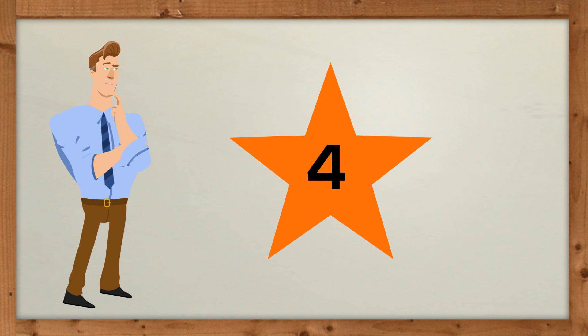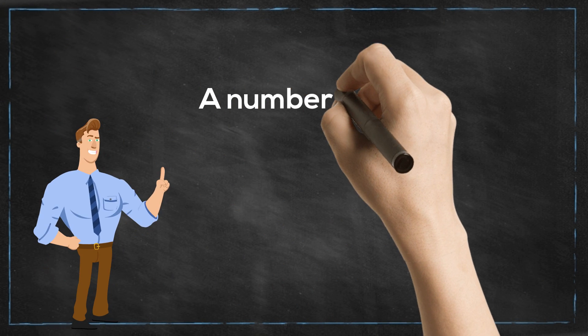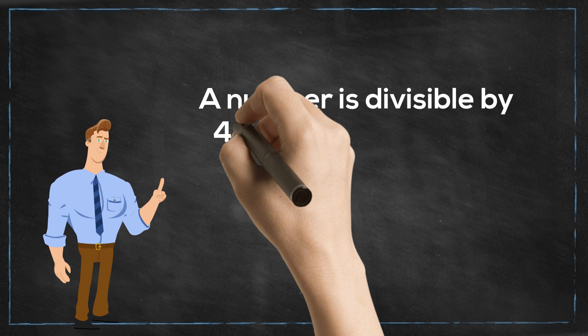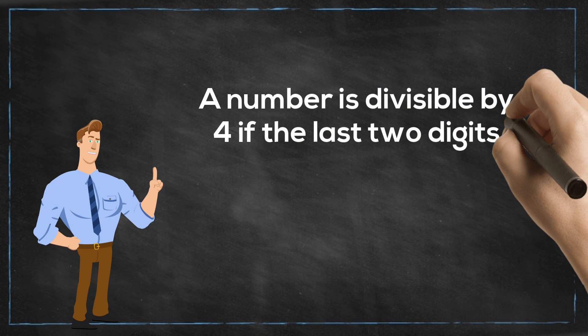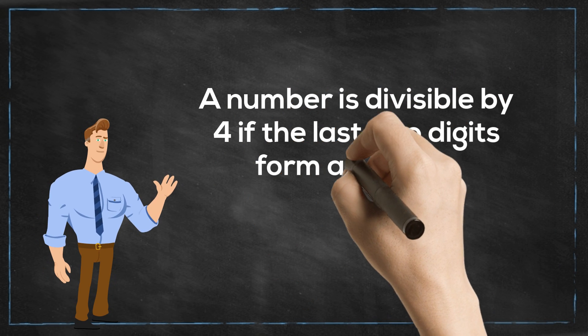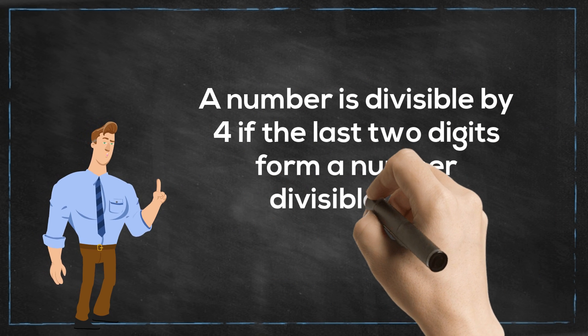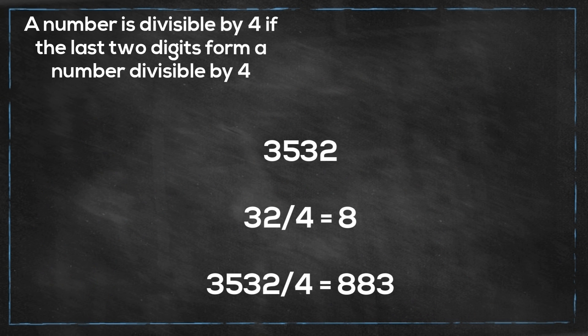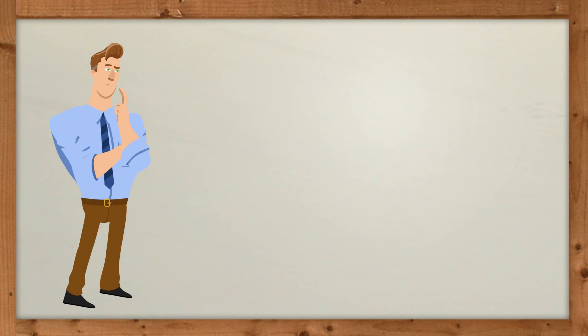Next, number 4. A number is divisible by 4 if the last two digits form a number divisible by 4. For example, 3532 — the last two digits are 32, which is divisible by 4, therefore 3532 is divisible by 4.